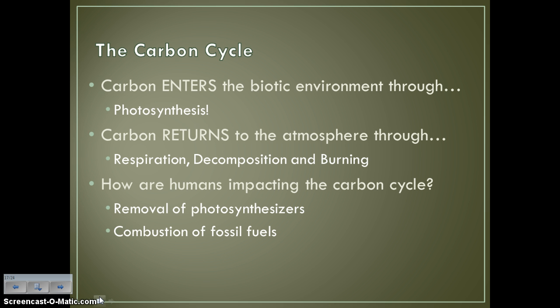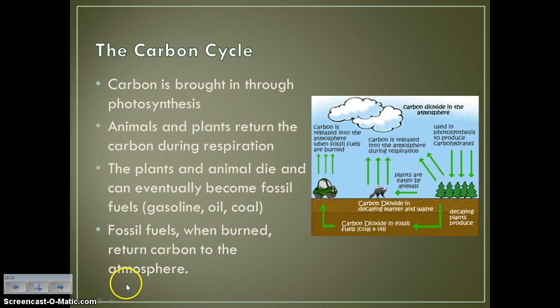How are humans having an impact on this cycle? We're constantly removing photosynthesizers when deforestation is going on, which means you're not allowing carbon to get into the environment the way it should. And we're forcing the burning of fossil fuels through combustion in factories. Carbon is brought in through photosynthesis, animals and plants return carbon during respiration, plants and animals die and can eventually become fossil fuels like gasoline, oil, and coal, and those fossil fuels when burned return carbon to the atmosphere.